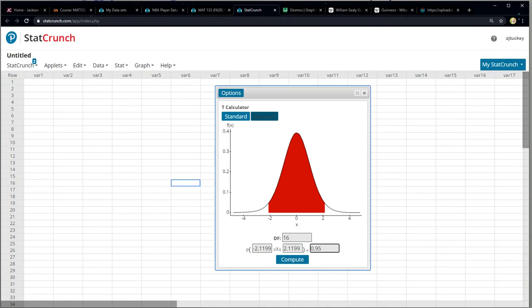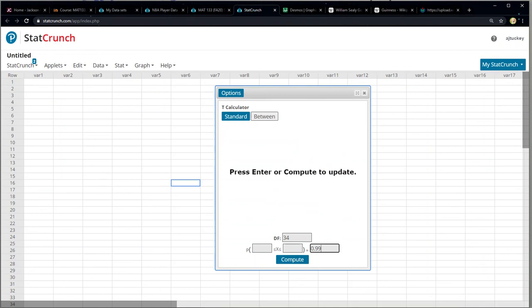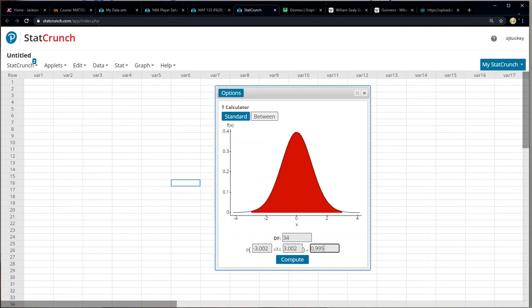So let's see here, between is fine. Change this to 34 and change the area to 0.995 enter. And there we have it, plus or minus T alpha over 2 is plus or minus 3.002.